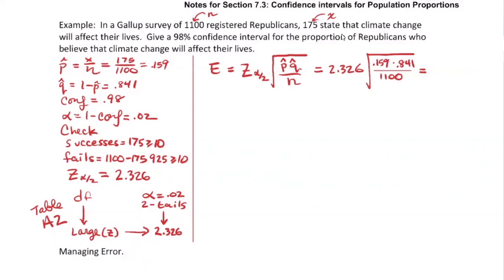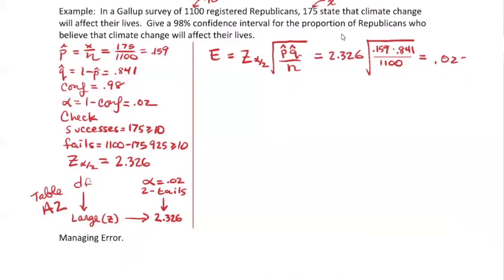Z-alpha-over-2 is 2.326. Under the square root: p-hat is 0.159, q-hat is 0.841, divided by sample size 1,100. Running the formula gives E equals 0.0256.